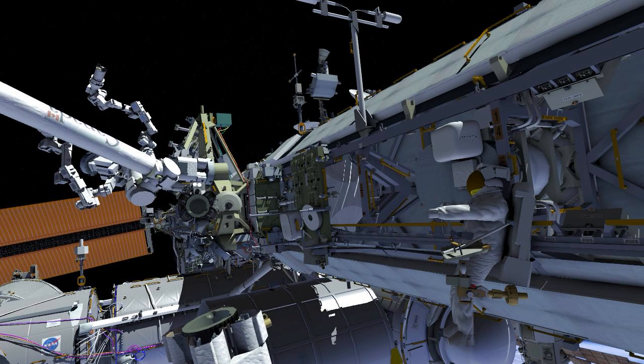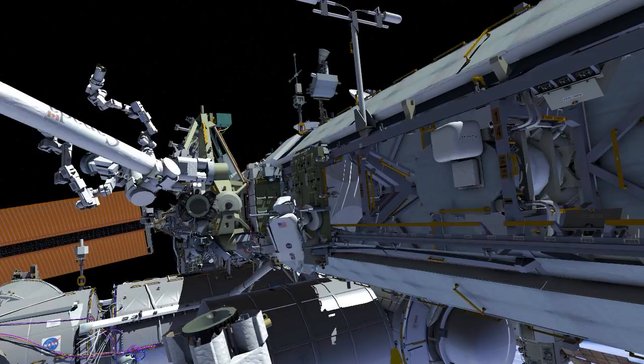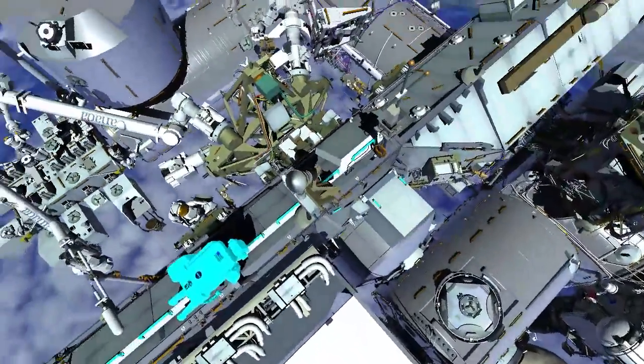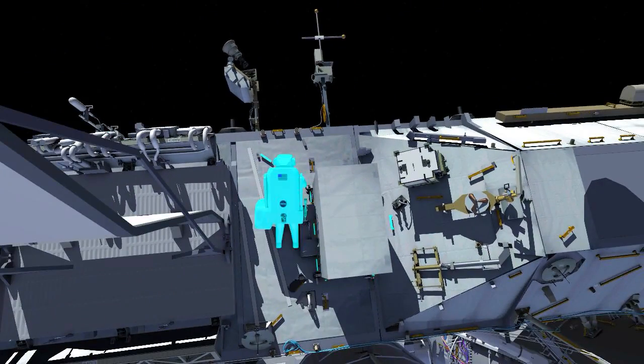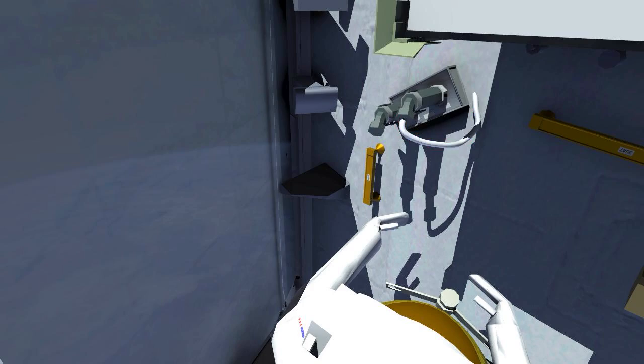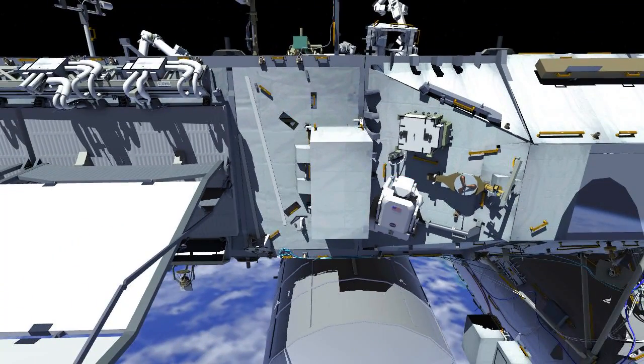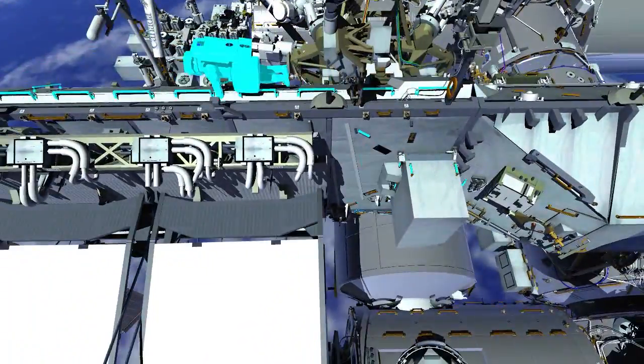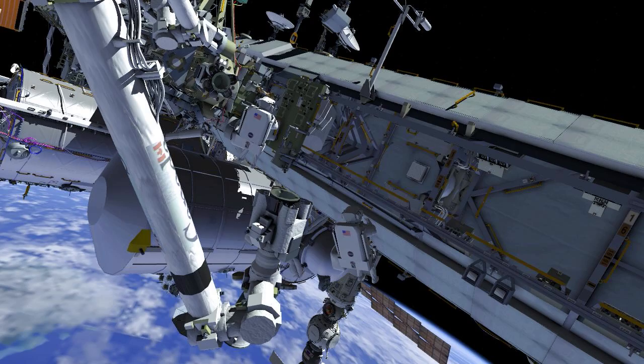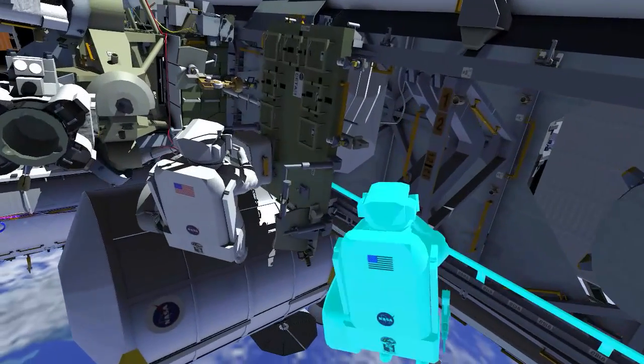While EV1 performs the T-handle tool installation, EV2 translates to a panel on the F-side of the truss. EV2 moves an electrical connector from a non-functional connector to a cable which can provide power. EV2 then picks up tool bags and returns them back to the airlock.